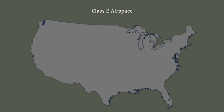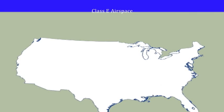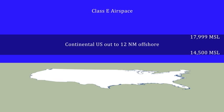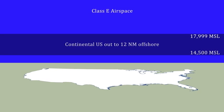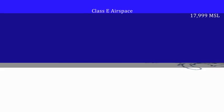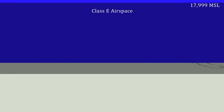Class E airspace exists in a number of places. The airspace from 14,500 MSL up to 18,000 MSL across the continental United States and coastal waters out to 12 nautical miles is all Class E. This lower limit of 14,500 MSL is extended downward to 1,200 AGL across widespread areas of the United States based on radar coverage.